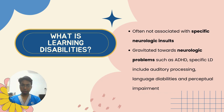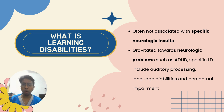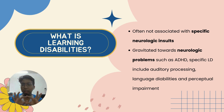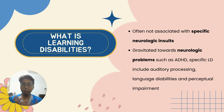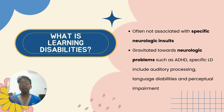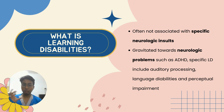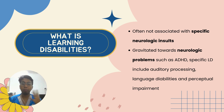Now let's talk about learning disabilities. Learning disabilities are often not associated with specific neurologic insults such as cerebral palsy, where neurologic insults refers to sudden disruptions to blood flow in the brain. Instead, learning disabilities gravitate toward neurological problems such as ADHD. Specific learning disabilities include auditory processing, language disabilities, and perception impairment.